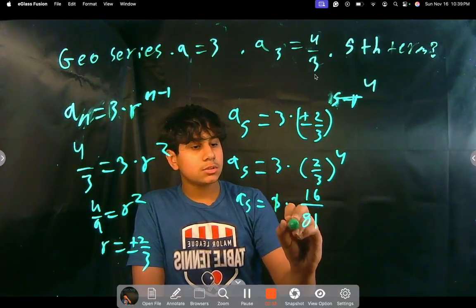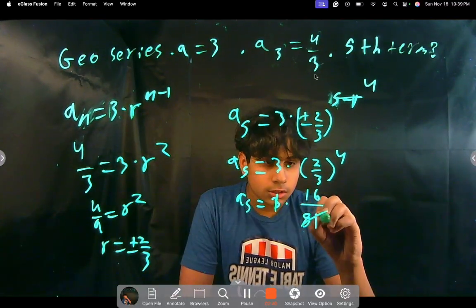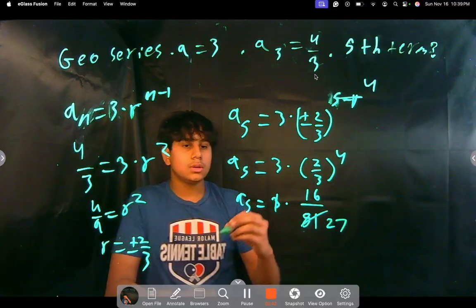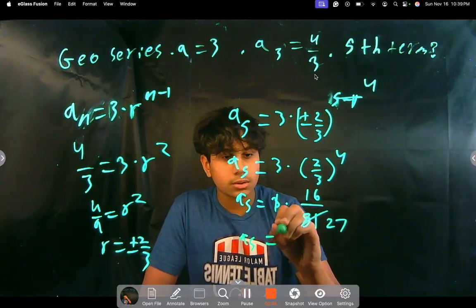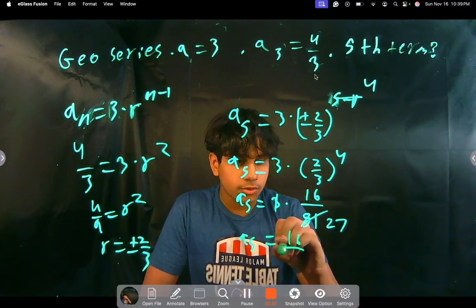And then we can just divide this out for simplicity. So we become 27, 27 times 3 is 81, yeah. So a of 5 equals 16 over 27.